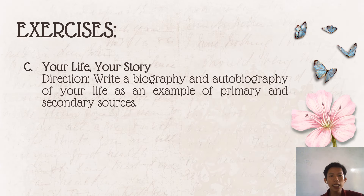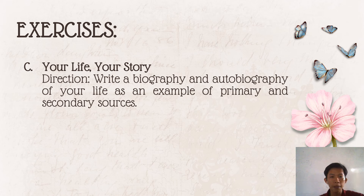Letter C — 'Your Life, Your Story': Write both a biography and an autobiography as examples of primary and secondary sources. An autobiography is your life written by yourself from your own point of view — a primary source. A biography is your life written by someone else — a secondary source — written from a third-person perspective. There is no minimum or maximum word count, as long as you narrate your life.